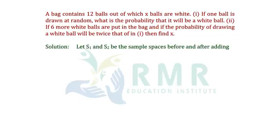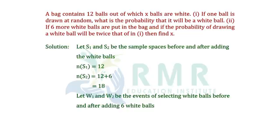Let S1 and S2 be the sample spaces before and after adding white balls. N of S1 equals 12. N of S2 equals 12 plus 6, which equals 18. Let W1 and W2 be the events of selecting a white ball before and after adding 6 white balls.